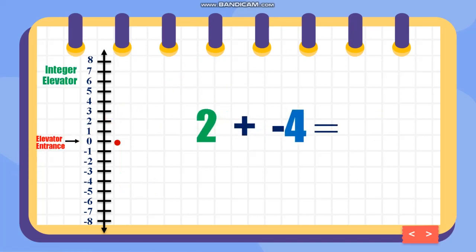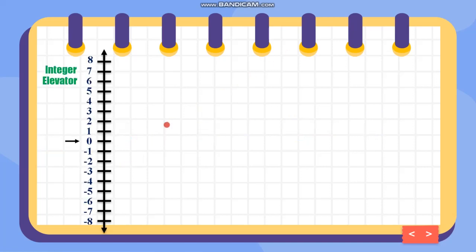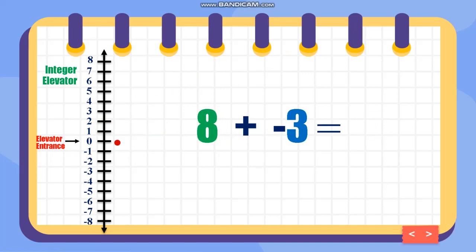Next, positive 2 plus negative 4: starting from 0 I go up to positive 2, then from positive 2 I go down because I'm adding negative 4 — I end up at negative 2. Next, positive 8 plus negative 3: going up to positive 8, then going down 3 times — I end up at positive 5.